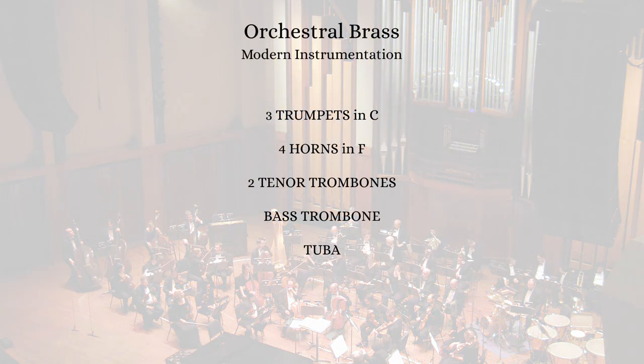A few quick thoughts before I dive into the first example. I'll mostly stick to the standard orchestral brass section: three trumpets in C, four horns in F, two tenor trombones, a bass trombone, and one tuba. These examples will obviously include subsets of that, but for the most part I won't add additional instruments, as this series has focused primarily on the modern orchestra.